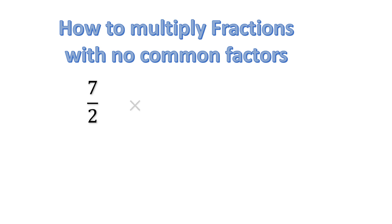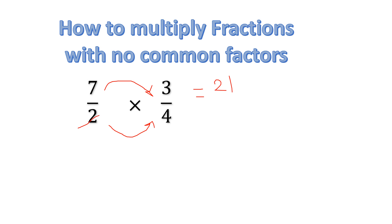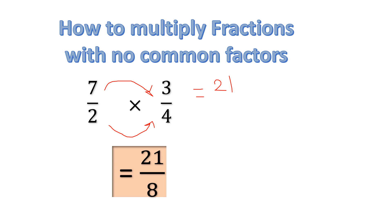How to multiply fractions with no common factors? We have 7 over 2 multiplied by 3 over 4. Checking pairs: 7 and 2, 3 and 4, 3 and 2, 7 and 4 — none have any common factor. Note: you cannot cancel denominator with denominator. Even though 2 and 4 have the common factor 2, please never do that — it is wrong. So we straight away multiply: 7 times 3 is 21 in the numerator, and 2 times 4 is 8 in the denominator. The answer is 21 over 8.